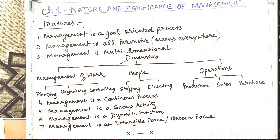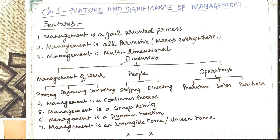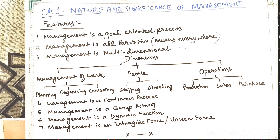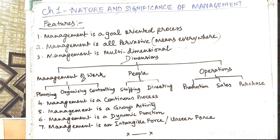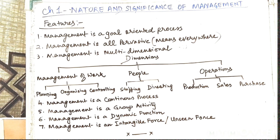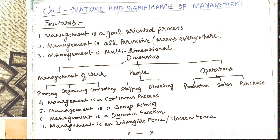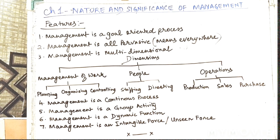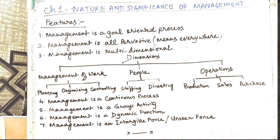The fifth one: management is a group activity. Every organization comprises a group of individuals who work together to achieve an organizational goal, meaning the main focus is on teamwork in an organization. Here we can see that the letter 'I' is replaced by 'we', so management is a coordinated process or activity — every activity in an organization is linked to one another.